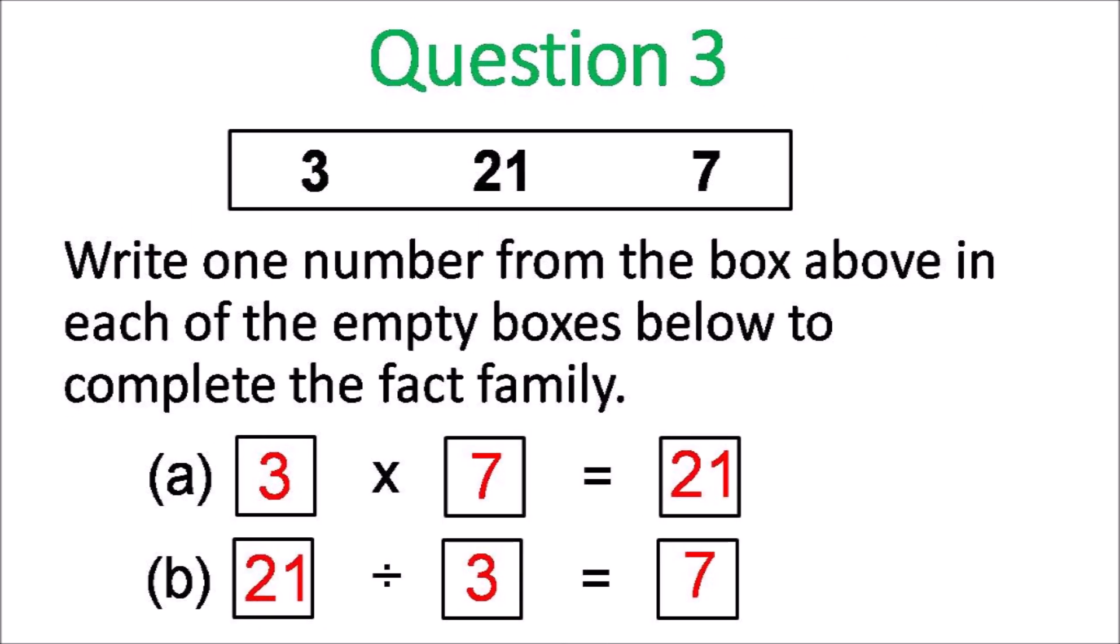Question 3. 3 times 7 is 21. Or 7 times 3 is 21. Same thing. 21 divided by 3 is 7. Or 21 divided by 7 is 3. Any of those answers.